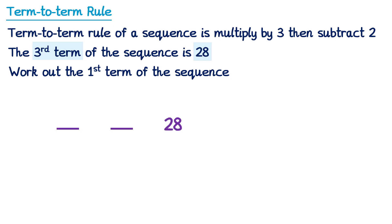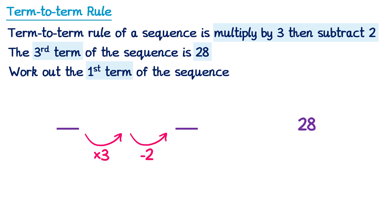We're working out the first term, and the term-to-term rule is multiply by 3, then subtract 2. Now I'm going to space these terms out a little more this time, because we have two parts to the term-to-term rule. So if we were doing this in the usual direction, we'd start with the first term, multiply by 3, and then subtract 2, and that would get us the second term. Then from the second term, we'd multiply by 3, and then subtract 2, and that would get us the third term.